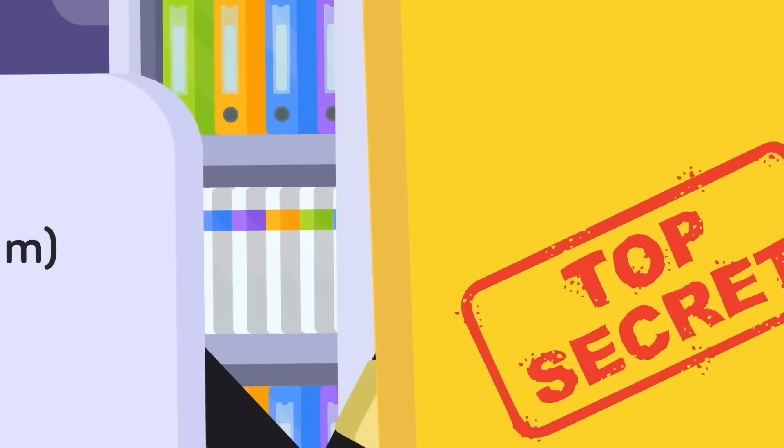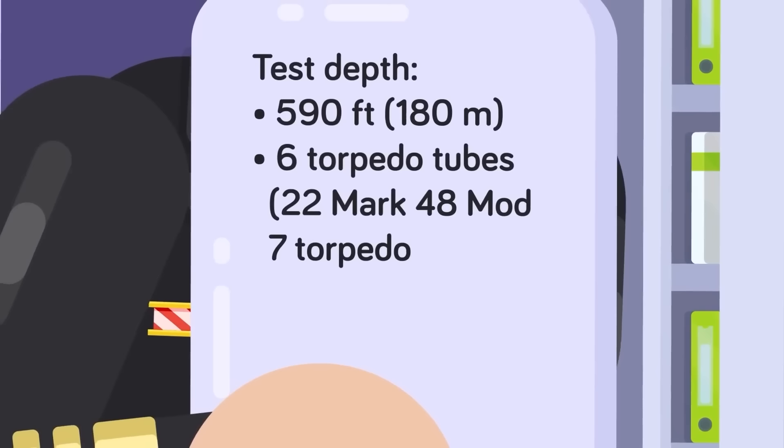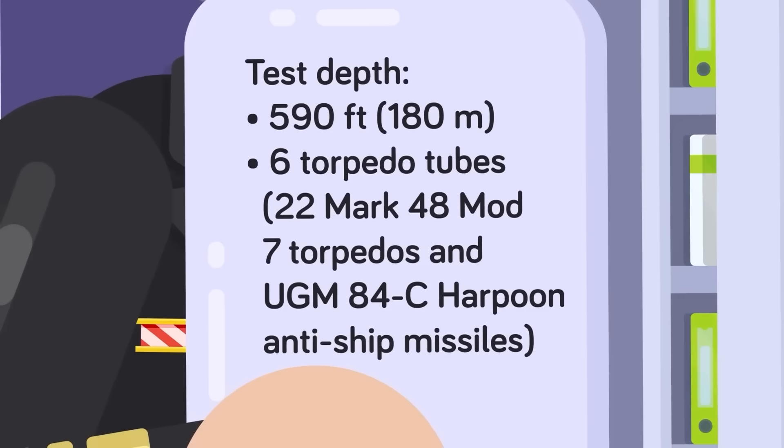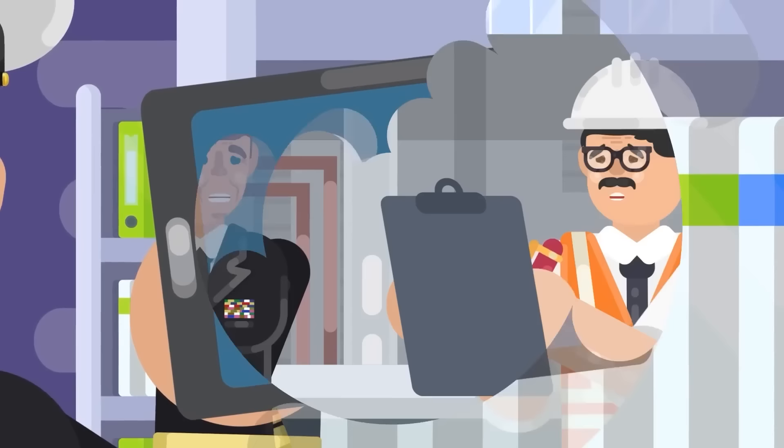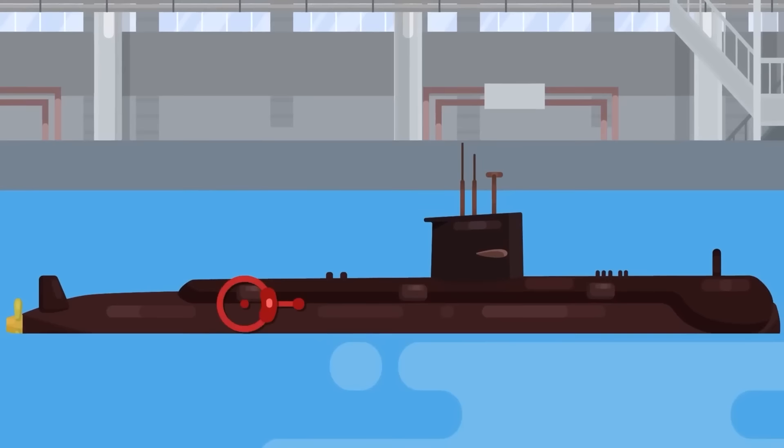Collins-class subs have six torpedo tubes with a mix of 22 Mark 48 Mod 7 torpedoes and UGM-84C Harpoon anti-ship missiles. These subs were formidable 40 years ago, but naval tech has come a long way since then, and Australia knew it needed to upgrade its fleet if it had any hope of controlling the waterways around the nation. And this is why the military decided it was time to build new submarines. And although nuclear-powered subs are the way of the future, Australia ruled them out for a few reasons.